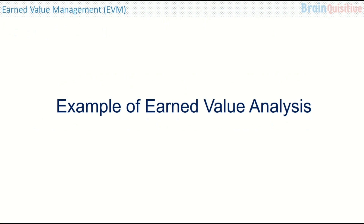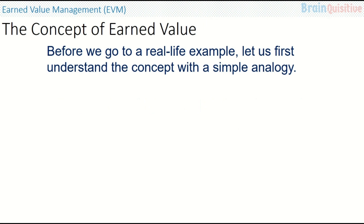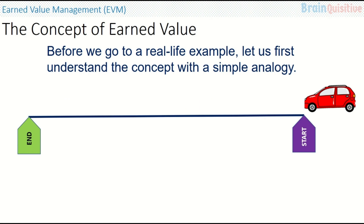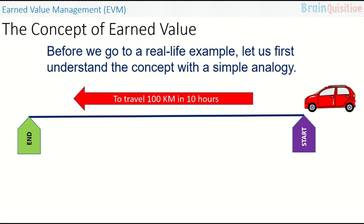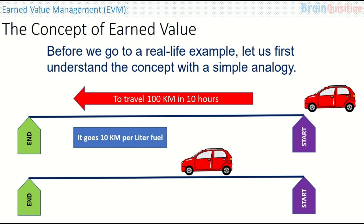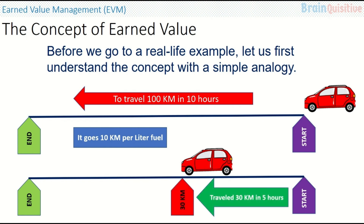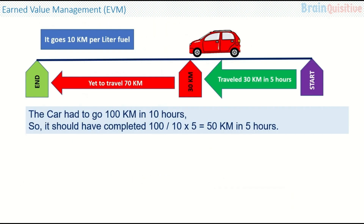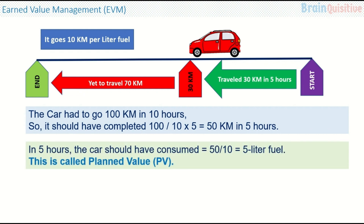Now let us see an example of earned value analysis using a simple analogy. We have a car that needs to travel 100 km in 10 hours, and the mileage of the car is 10 km per litre. After the car travels for 5 hours, we see that it has travelled only 30 km and has yet to travel 70 km. The car should have completed 100 divided by 10, multiplied by 5 — that is 50 km — in 5 hours.